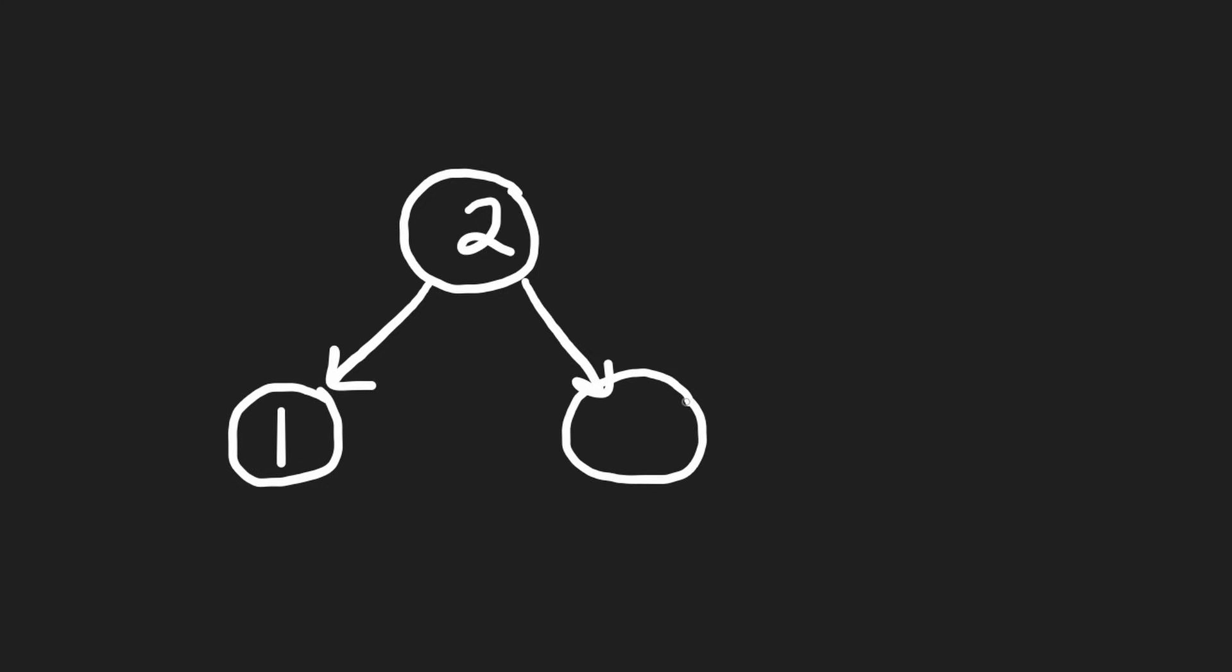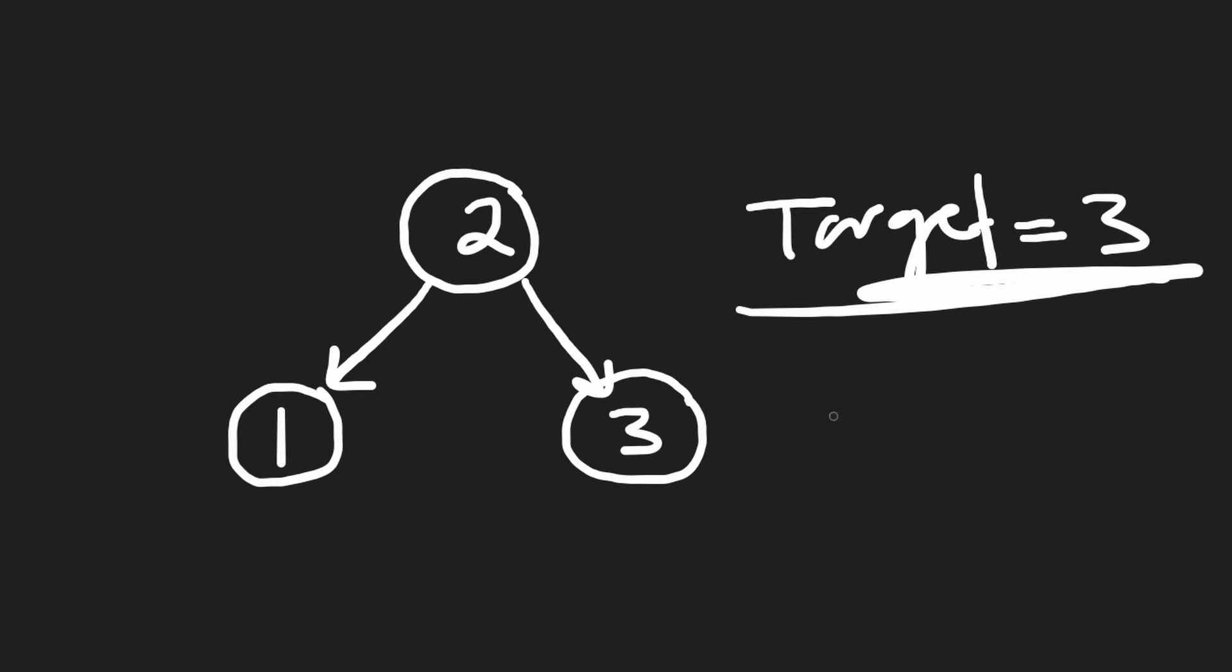Suppose we were in a room together and I drew this on a whiteboard, and I told you that given some target value, for example, in this case, three, and given some tree like this one, write an algorithm that returns true if the target value exists in the tree and return false if the target value does not exist in the tree. Now, if you're the candidate and you immediately start writing an algorithm, what if you assumed that this is actually a binary search tree and then you write a binary search algorithm? You look at two, you see that it's less than three, so you say, okay,